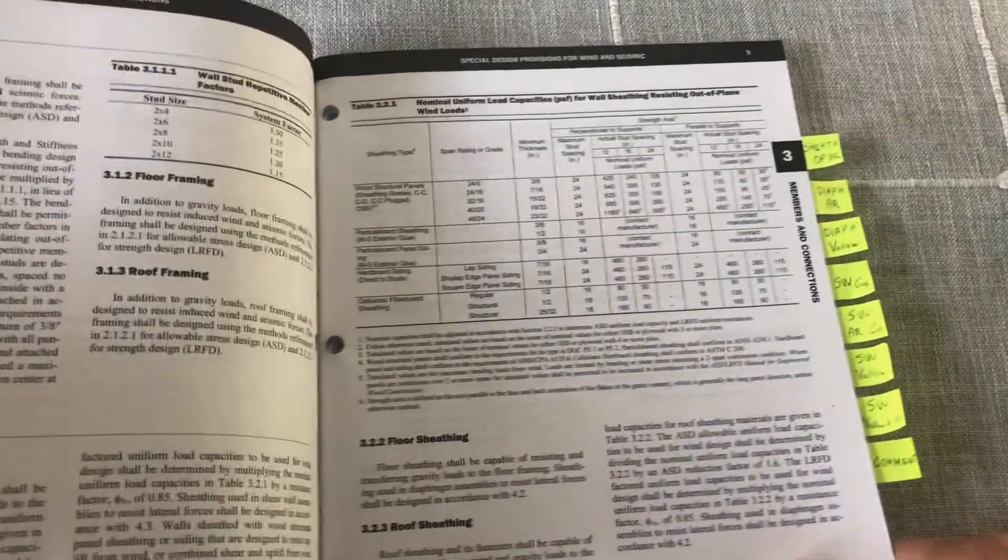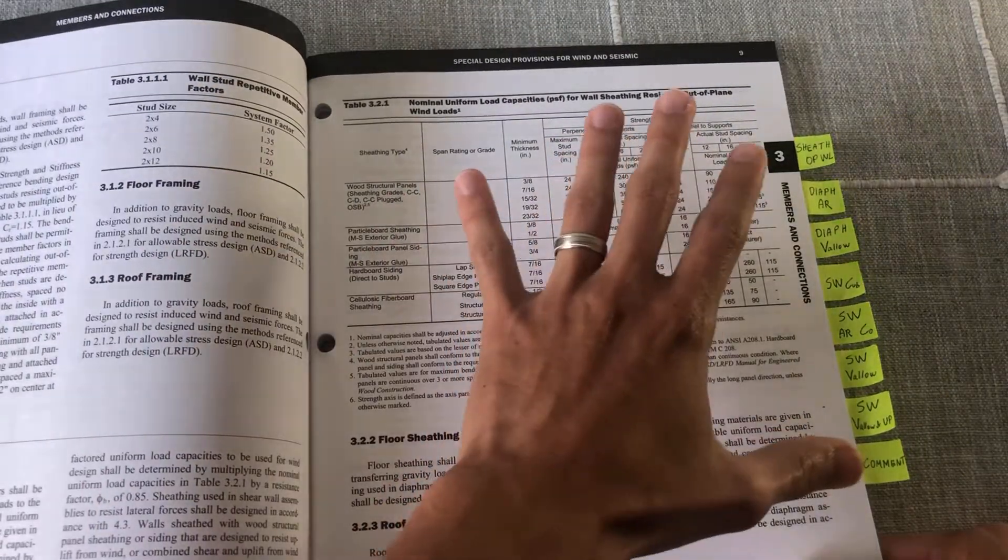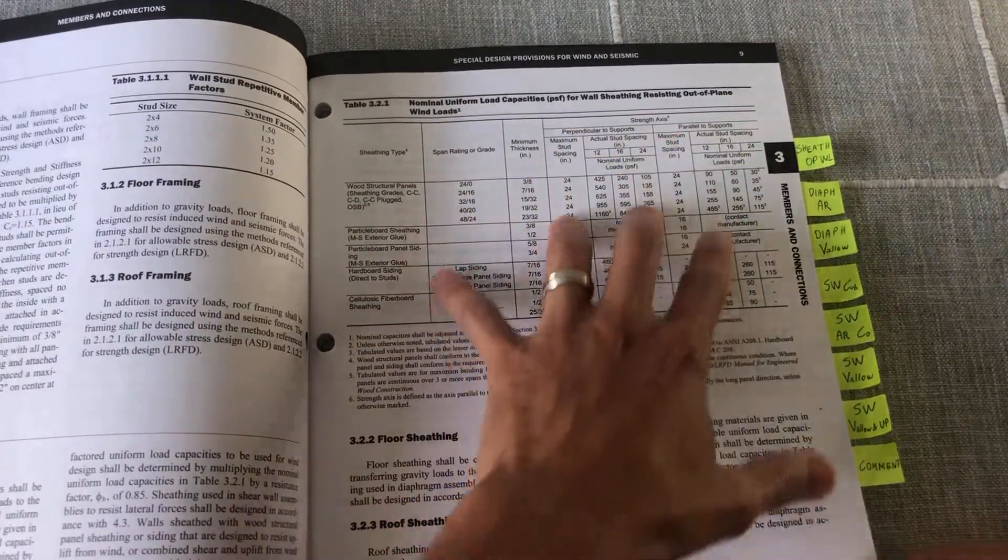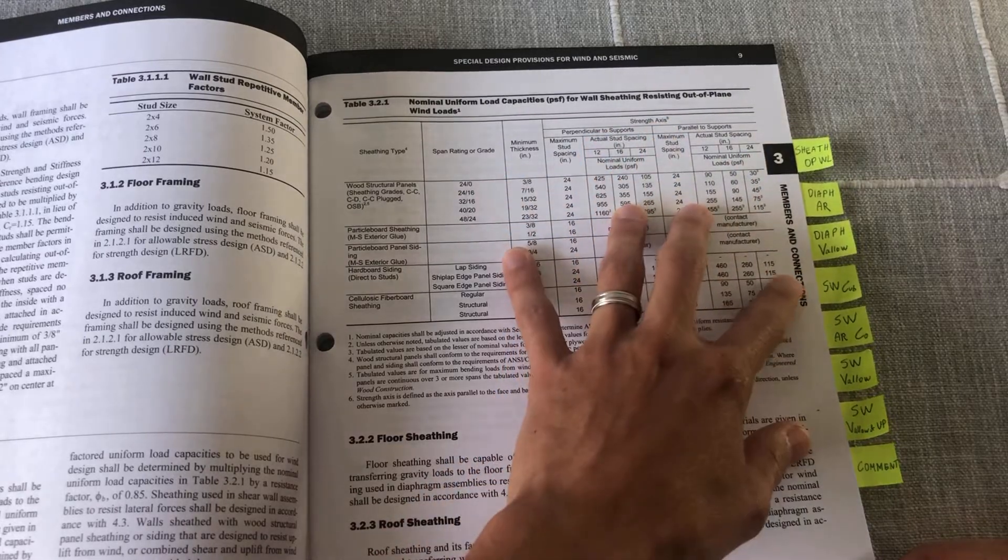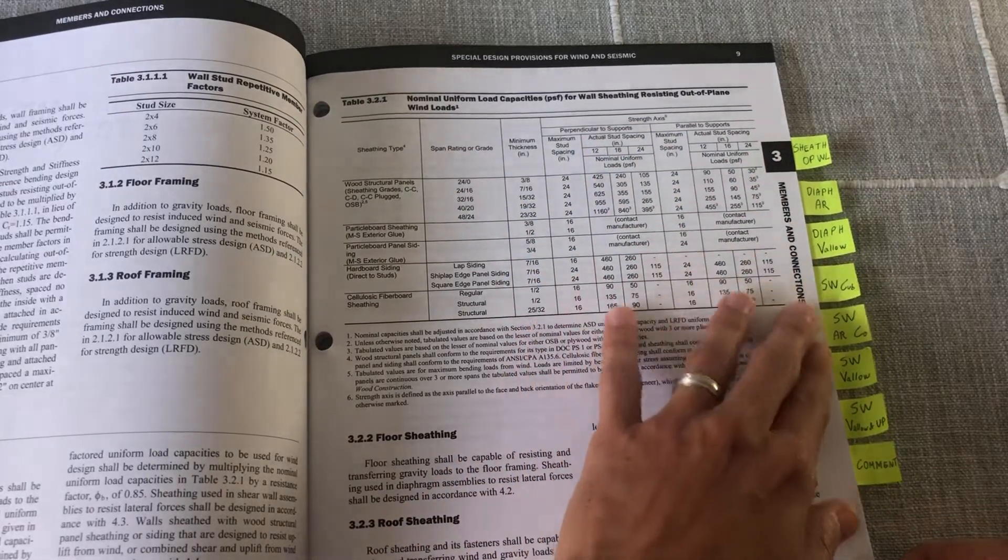Now we're going to cover basically two types of systems, which are diaphragms and then walls and mostly shear walls.